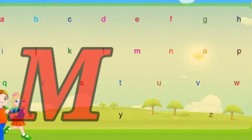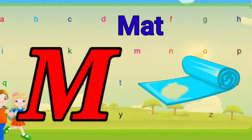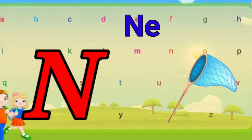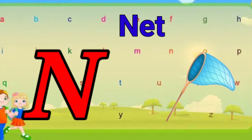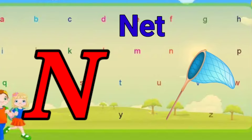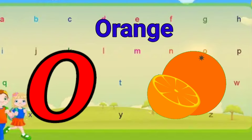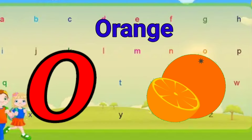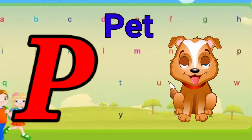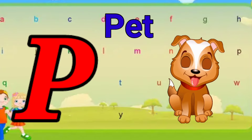M is for mat, m-m-mat. N is for net, n-n-net. O is for orange, o-o-orange. P is for pet, p-p-pet.